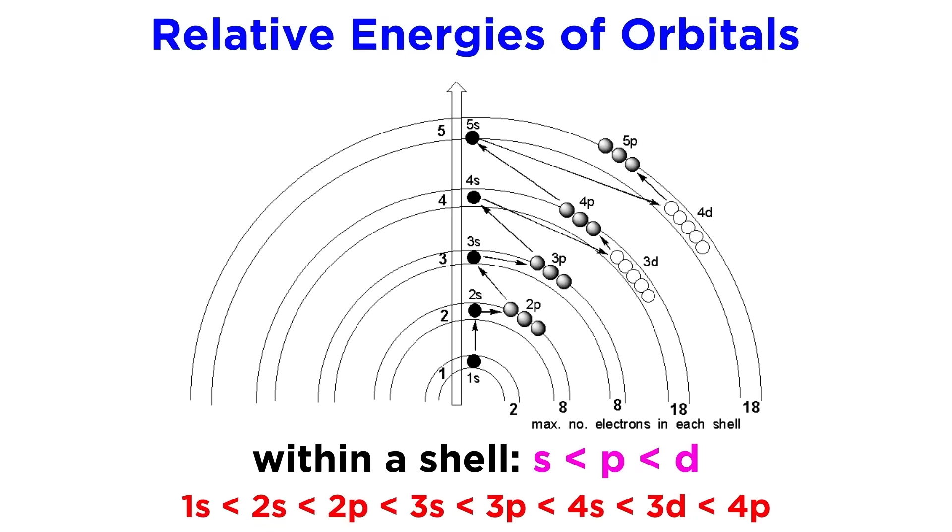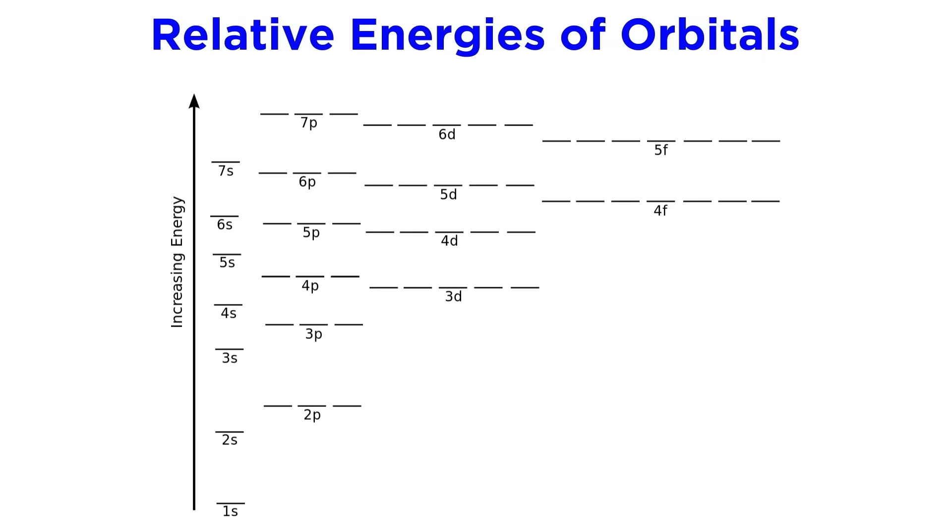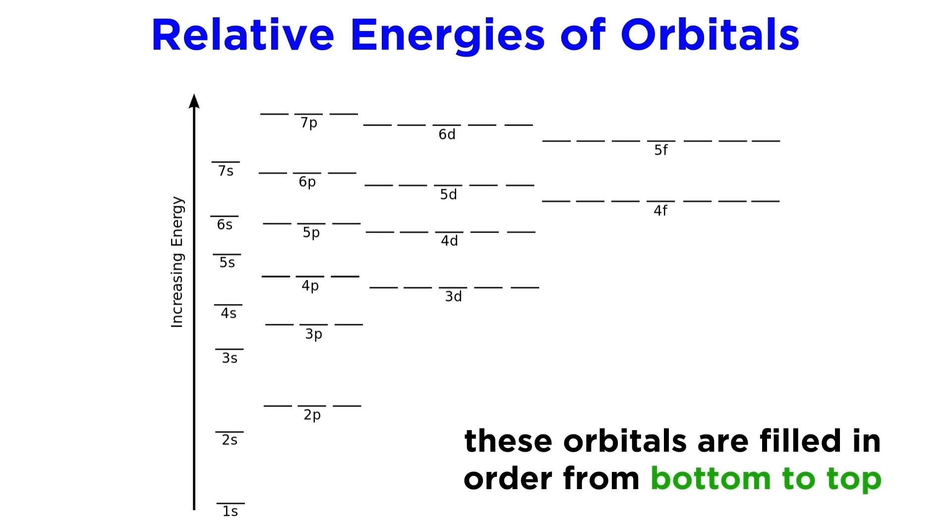But this pattern isn't followed precisely when we get to larger atoms, the first deviation being that the 3d orbitals are higher in energy than the 4s. Looking at this diagram we can see the precise order of the orbitals in terms of increasing energy. Since the system will always want to be at the lowest energy possible, this is the order from bottom to top that an atom will arrange its electrons.